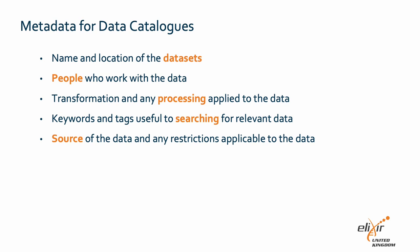Processing metadata describes any transformation and or curation made to the data. Search metadata are the keywords and tagging used to facilitate finding data. Source metadata provides details about where the data comes from and if there are any limitations and restrictions when using the data. You may not need all of these metadata types in your data catalogue, but it's helpful to bear these things in mind when you start building your research lab's data catalogue.